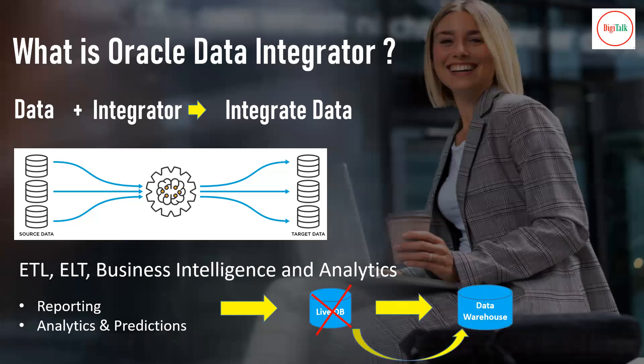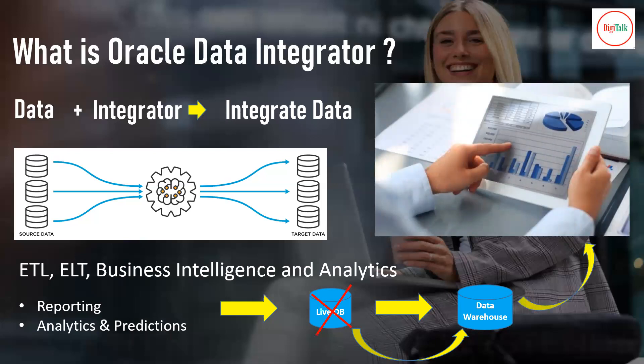Historical data is transferred to a separate database for reporting and analytics — this is called a data warehouse. Whenever data is generated in the live database, it is transferred to the data warehouse on a schedule. From the data warehouse, you can create static reports, dynamic reports, or analytics and predictions. The source is your live database, and the target is the data warehouse used for reporting purposes.